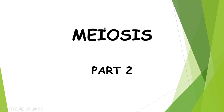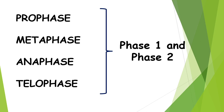Remember mitosis — the first cell division we did, which was basically just creating two identical daughter cells through normal cell division. The phases were interphase, prophase, metaphase, anaphase, and telophase. The nice thing about meiosis is that those phases stay the same — it is still prophase, metaphase, anaphase, telophase, with interphase happening at the beginning, and cytokinesis, which is the actual splitting of the cytoplasm.